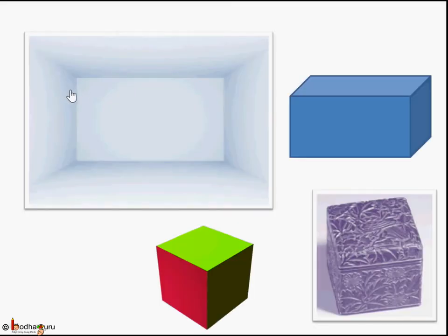So let's take some solid shapes of cubes and cuboids. Here is a cuboid, and here is a cube. It's a 3D shape. Cube has length, breadth, height all same.